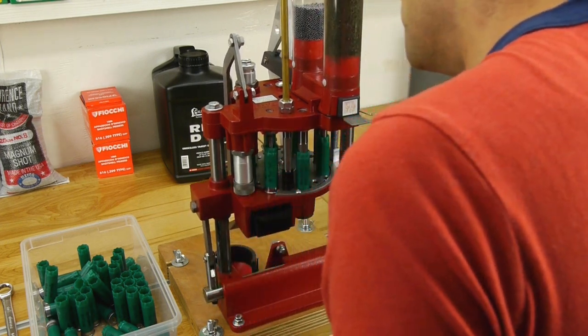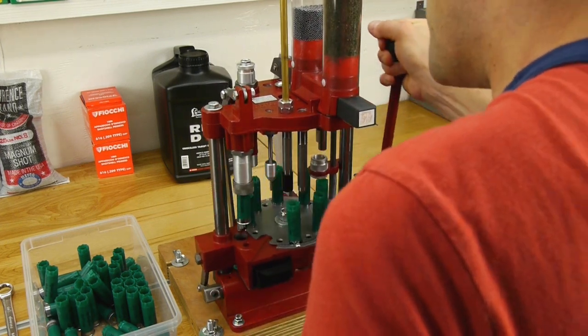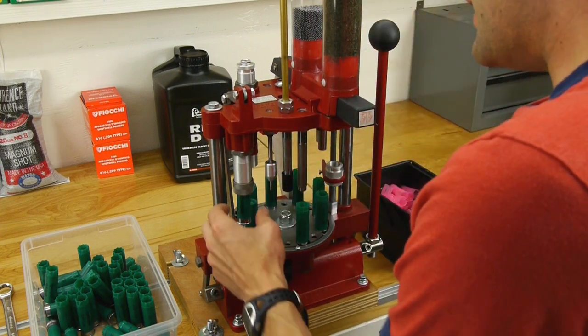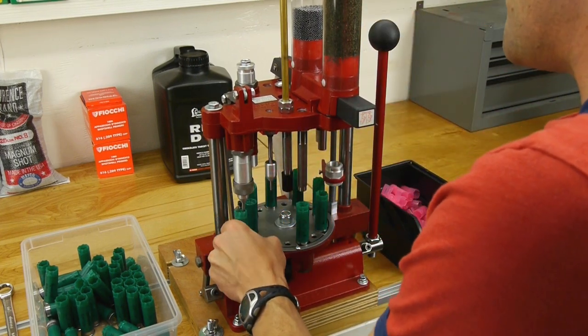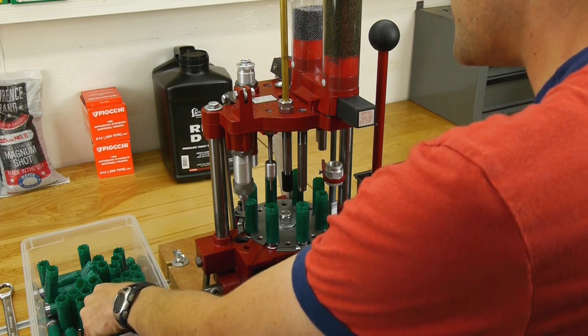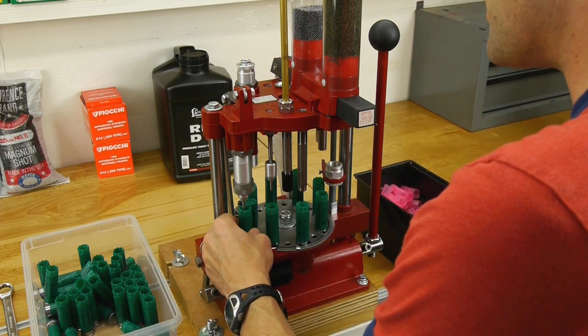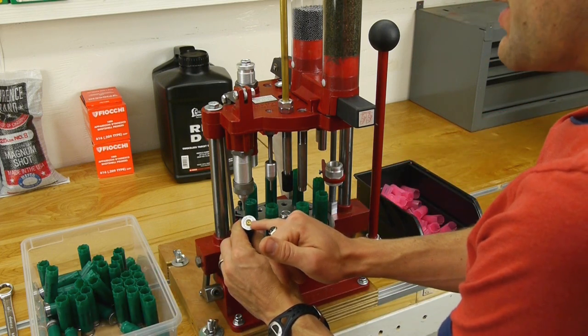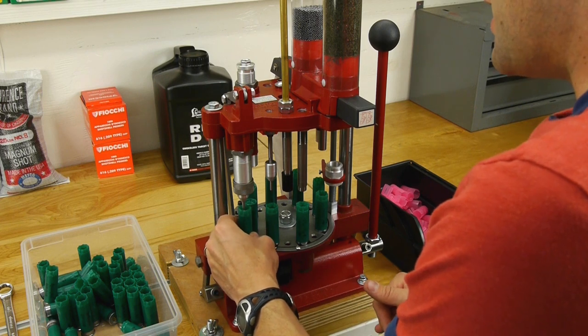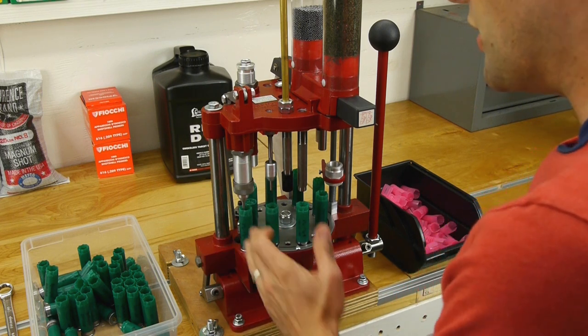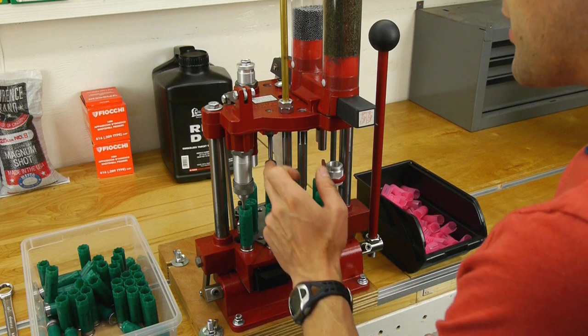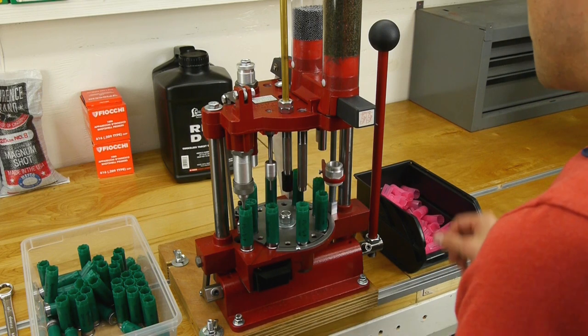So I'm all ready to go here. I'm going to lower the handle, raise the handle and each time I do that I pull the hull from the sizing station. I put it into station number one and insert a fresh hull. This obviously hasn't been deprimed yet. That happens in the sizing station as well. If you don't need to size that can also happen here in station number one.